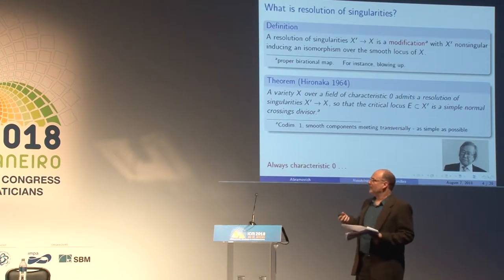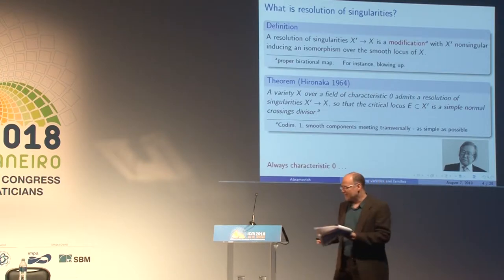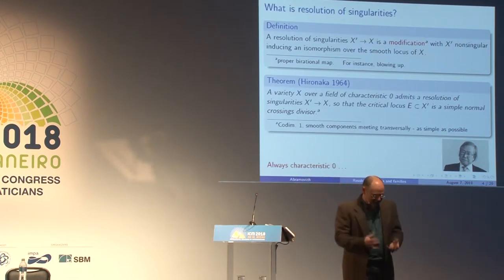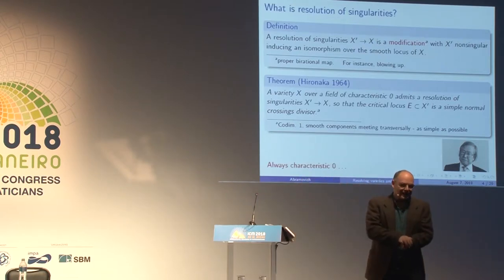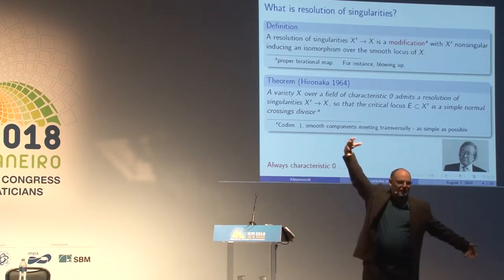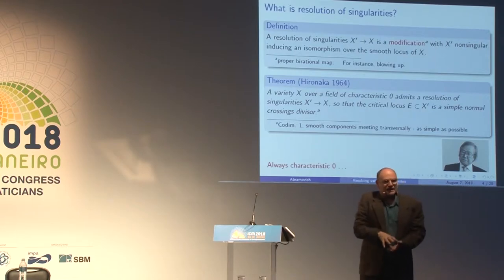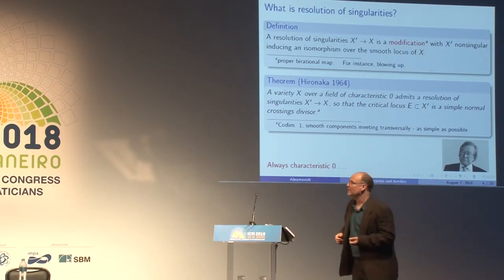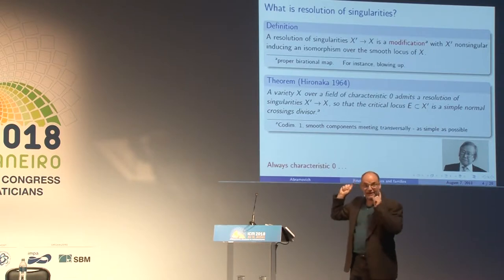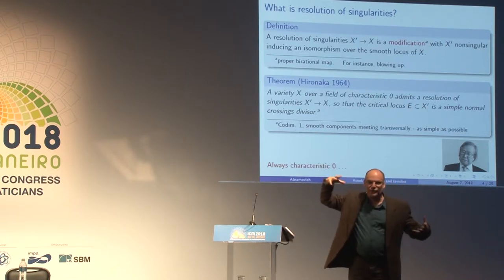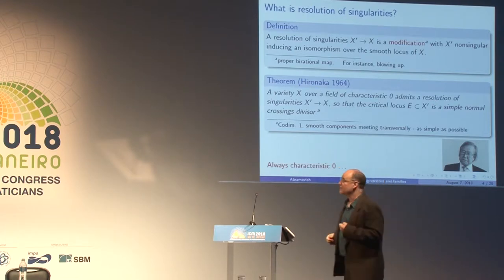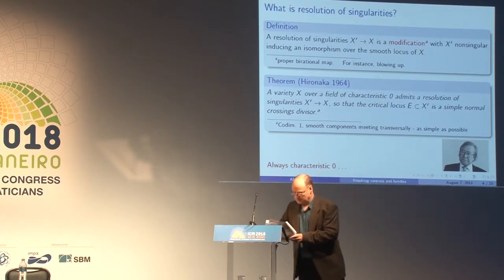What is the fundamental importance of resolution of singularities? I think algebraic geometry is a subject that is fortunate that any geometry is global smooth geometry packed very tightly, in a very precise sense — which is described in characteristic zero. Every geometry is smooth global geometry packed tightly.